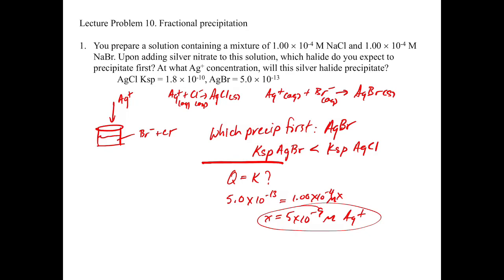The true correct answer is that precipitation begins at 5×10⁻⁹ M silver. At exactly that concentration, Q equals KSP and you're at equilibrium. When [Ag⁺] exceeds 5×10⁻⁹ M, Q goes greater than KSP and you precipitate the bromide.